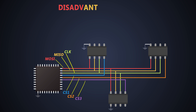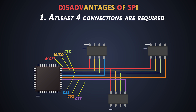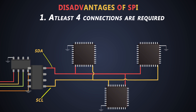There are some disadvantages as well. First, there are at least four connection lines required for communication: MISO, MOSI, CLOCK, and CHIP SELECT. And if there are multiple slaves, these connections increase. Whereas I2C or CAN communication need only two wires, irrespective of the number of slaves.